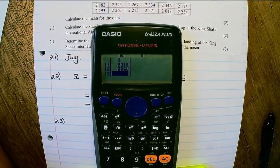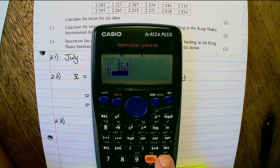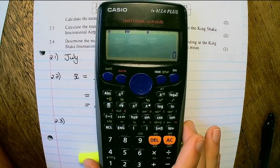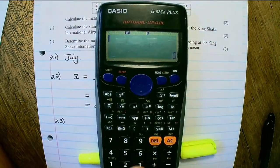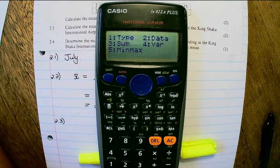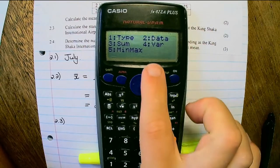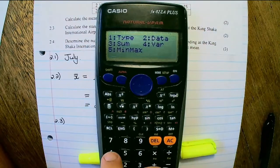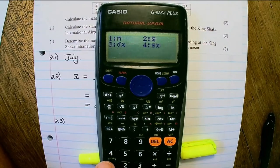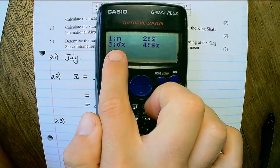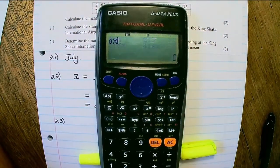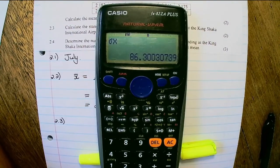After you've entered all the data values you press AC, then shift 1. We want to find the standard deviation, so it's option 4, 2, and we press 3 for the standard deviation. That is 86.3.